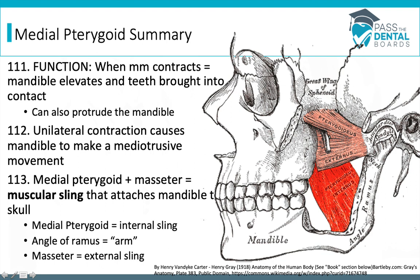Even though both the medial and lateral pterygoid can protrude the mandible, protrusion is not heavily tested with the medial pterygoid but is with the lateral pterygoid. Unilateral contraction causes the mandible to make a mediotrusive movement — when just one side contracts, the jaw moves to the other side. If the left contracts, the jaw moves to the right; if the right contracts, the jaw moves to the left. This muscle is part of the muscular sling, where the medial pterygoid is the internal sling and the masseter is the external sling.